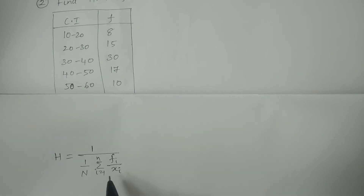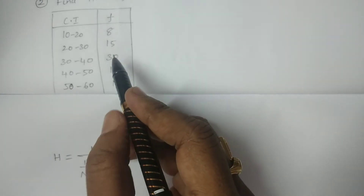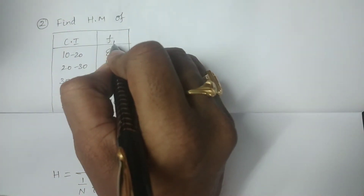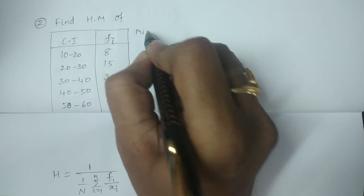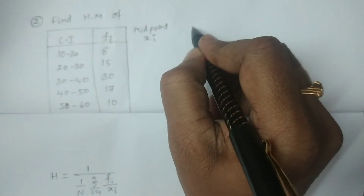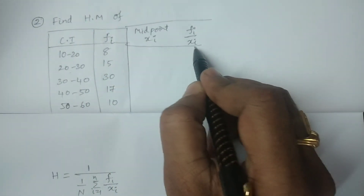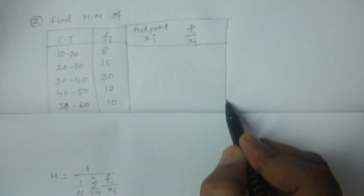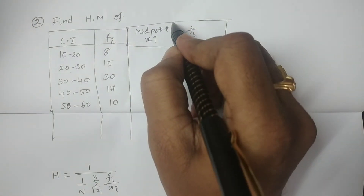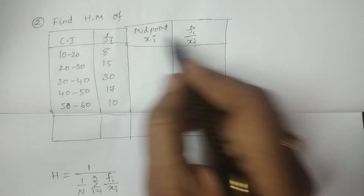For this formula, you need to calculate xi, the midpoint of each class interval. Class intervals and frequencies are given, so you must add two additional columns: xi (midpoint) and fi/xi. Capital N is the summation of all fi values, and you also need the summation of fi/xi.